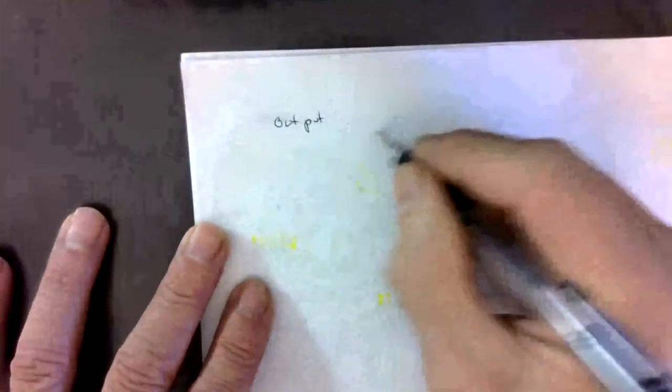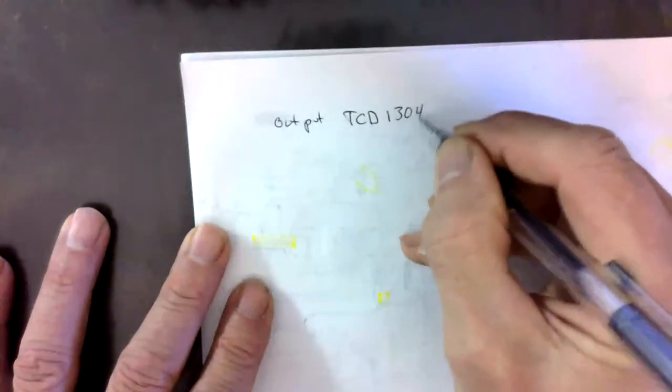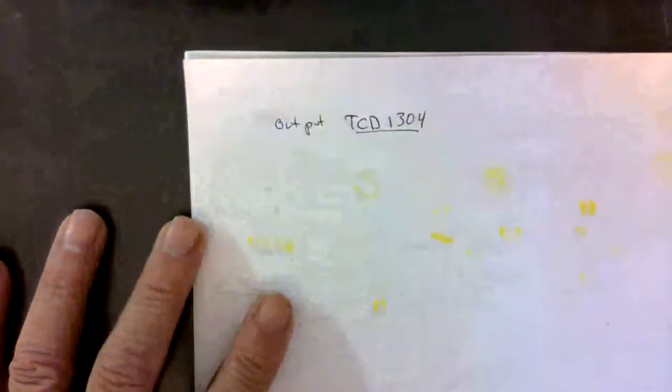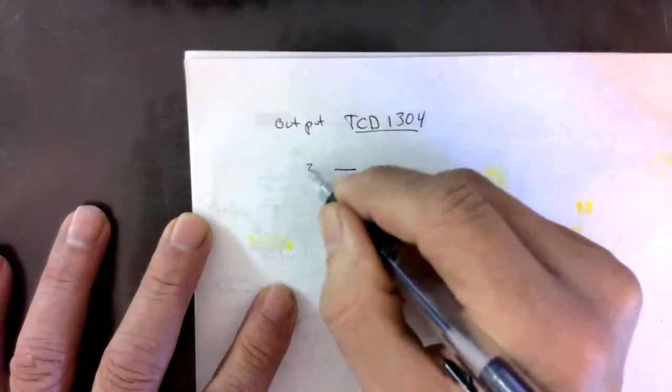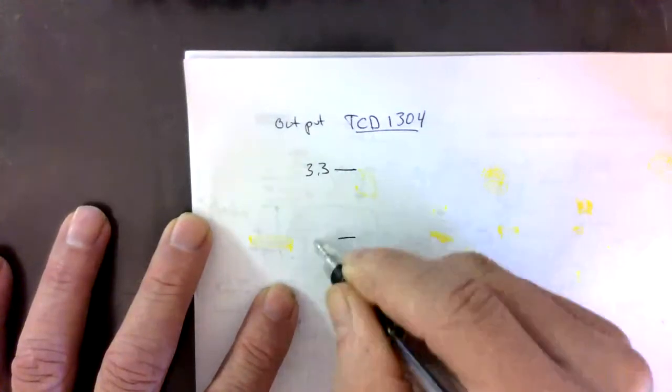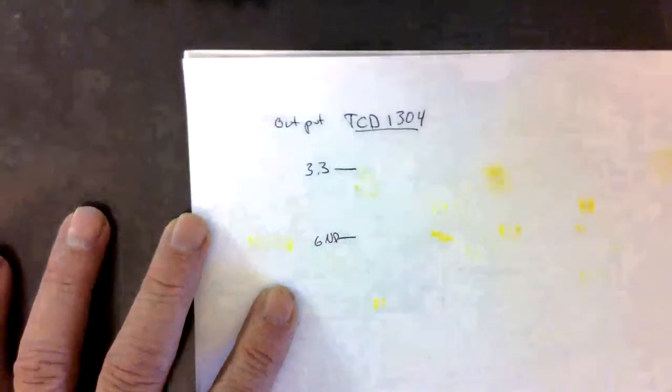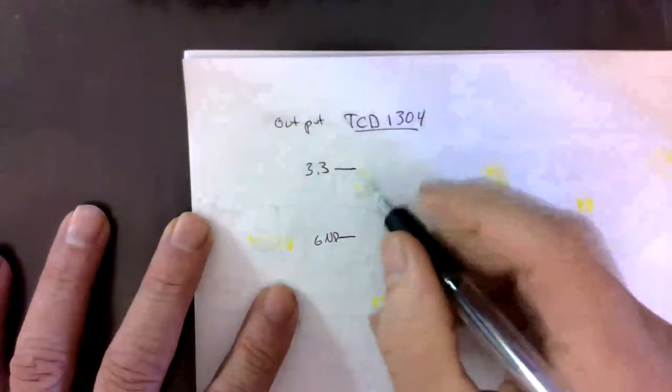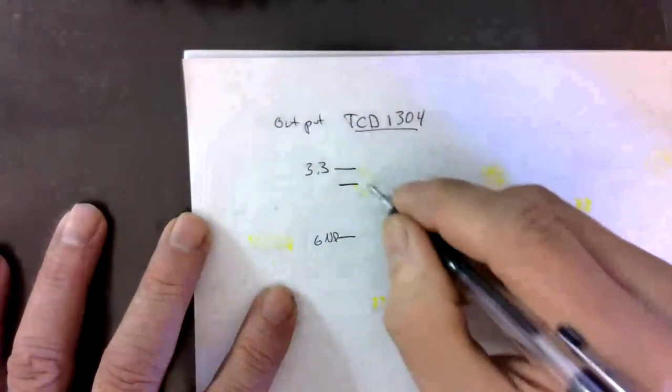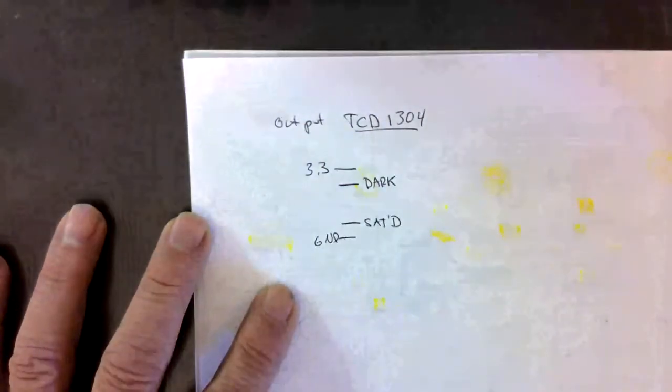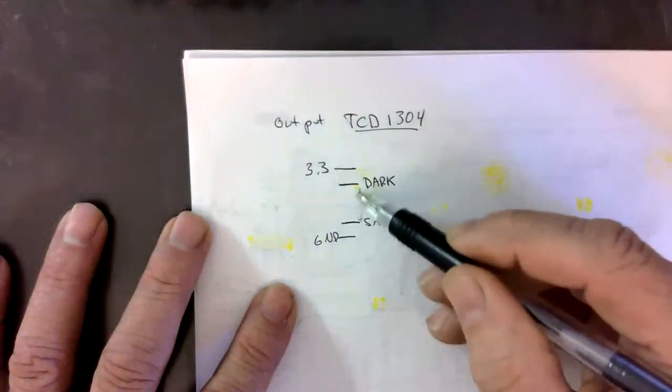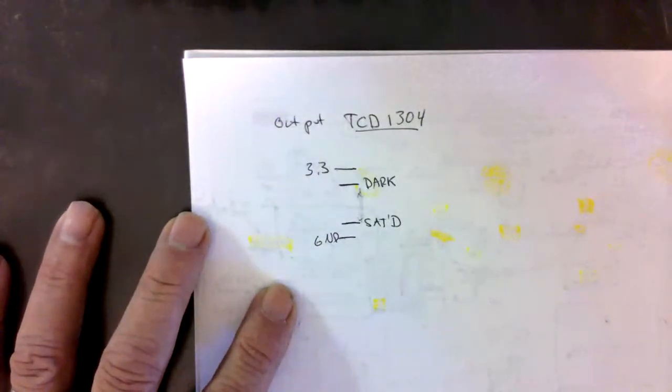So let's take a look at what our inputs and outputs are going to look like. The output from the TCD 1304 is going to be a voltage between the high voltage that we feed the TCD1304 and the ground. It's got to be between those two, can't be any higher than 3.3, can't go negative. What you'll see if you look in the data sheet is that it has a dark voltage that is high and a saturated voltage that is low. What we want to do is amplify this to be within the constraints of our A to D converter.